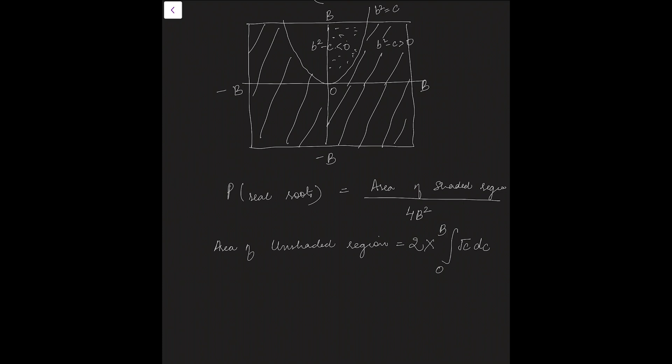The y-axis c varies and the x-axis small b varies. So, if we solve this, area of unshaded region will come out to be 4 by 3 into b to power 3 by 2.